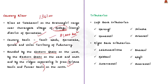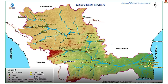Let us learn about Kaveri's tributaries. Harangi, Hemavati, Shimshah and Arkavati are the left bank tributaries of Kaveri, whereas Lakshmana Tirtha, Kabini, Swarnavati, Bhavani, Noyal and Amaravati are its right bank tributaries. After flowing for nearly 800 kilometers, the Kaveri river finally drains into the Bay of Bengal.